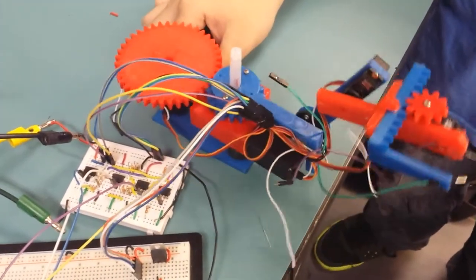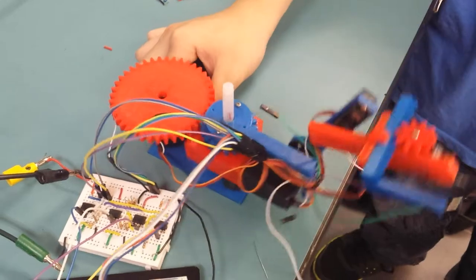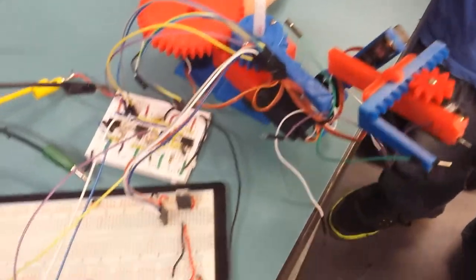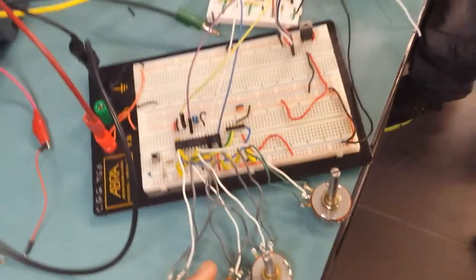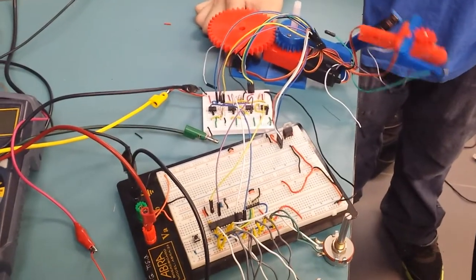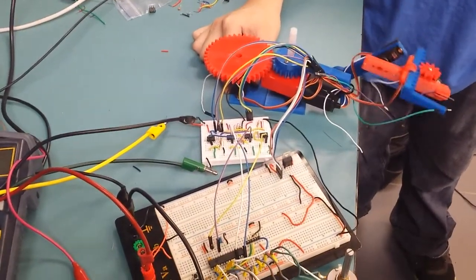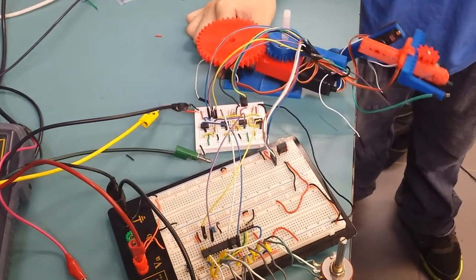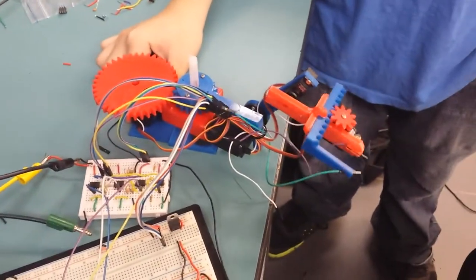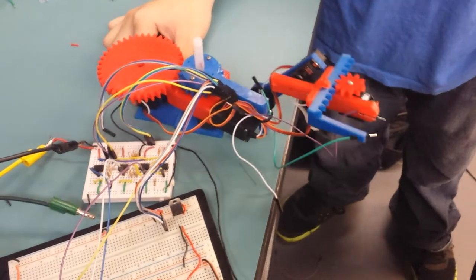Here I have control of the turn with the second potentiometer. Here I can control the height of the arm. With this one I choose the other height.